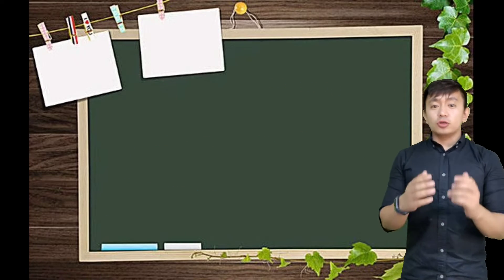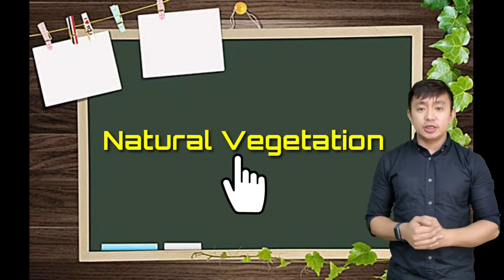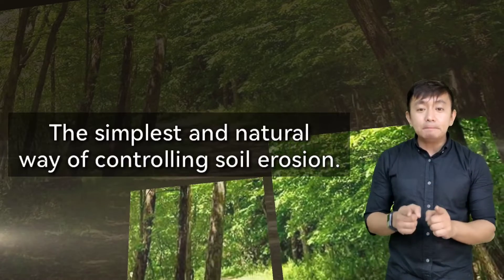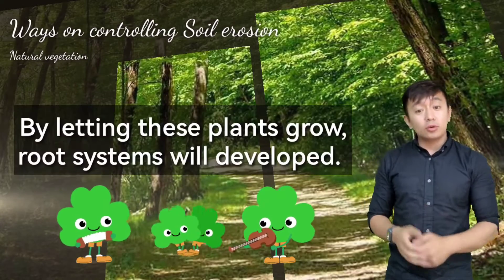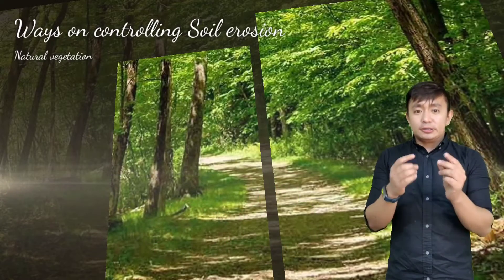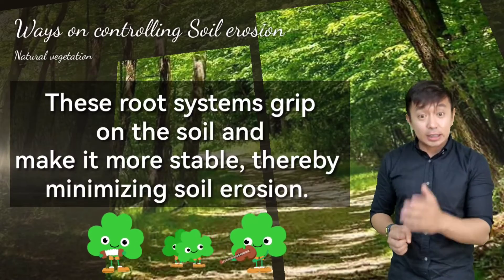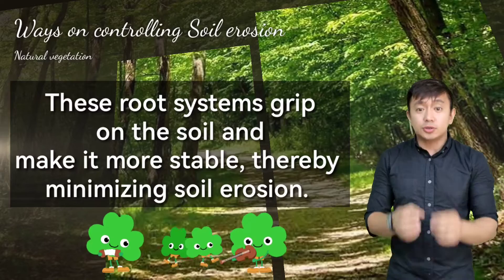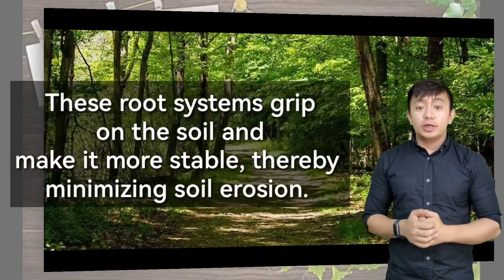Another way of controlling soil erosion is through natural vegetation, which is considered the simplest form of controlling soil erosion. We allow trees and plants to grow naturally. Therefore, there is the development of a root system, and this root system grips the soil, which allows it to be more stable and minimizes the flow of erosion.